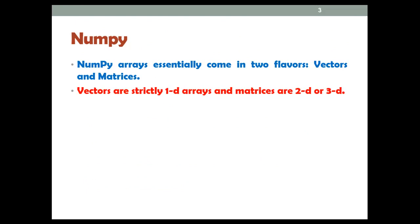NumPy arrays essentially come in two flavors: vectors and matrices. Vectors are strictly 1D arrays, while matrices can be 2D or 3D.